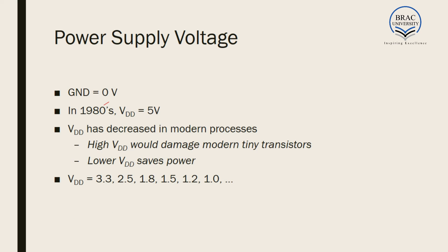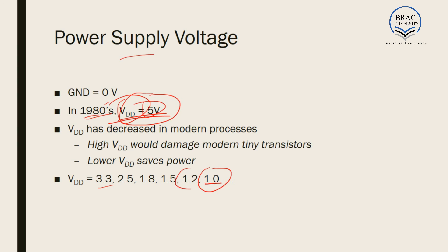Power supply voltage plays an important role in our design. As we increase the number of transistors, the power supply decreases. In the 1980s, the logic supply level was 5 volts, but now it has decreased quite a lot — at present, 1 volt or 0.9 volts are also used. In very tiny MOSFETs, if you provide a high VDD such as 5 volts, they may burn out. They are suitable for operating at 1 volt or 1.2 volts. Lower voltage saves power, and as a result our circuits are more efficient and small.